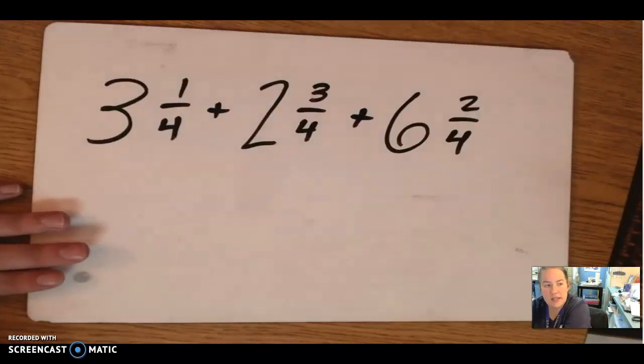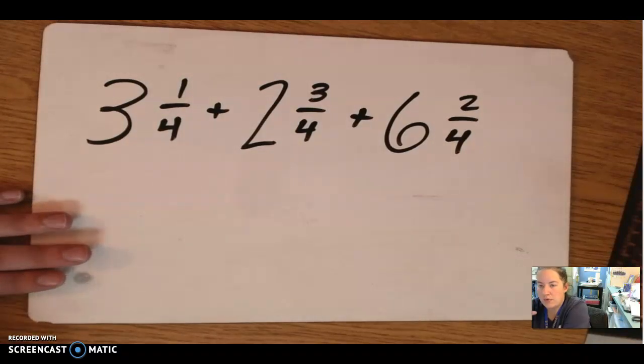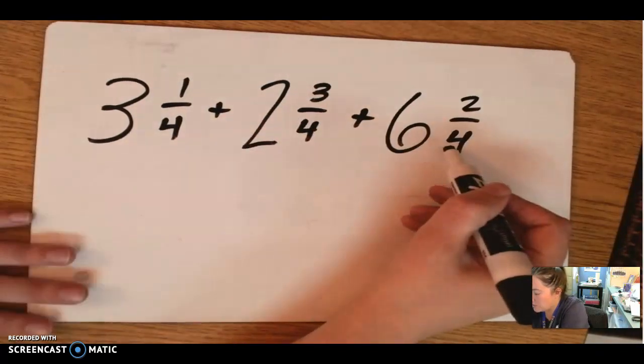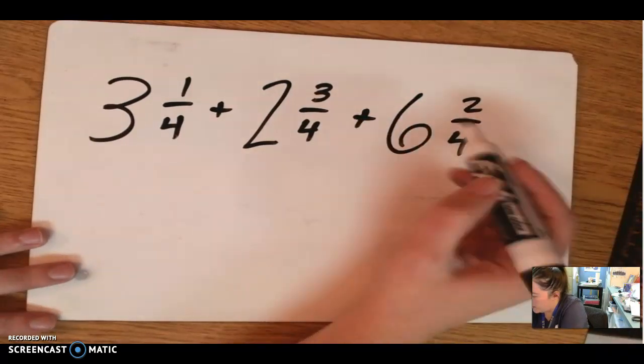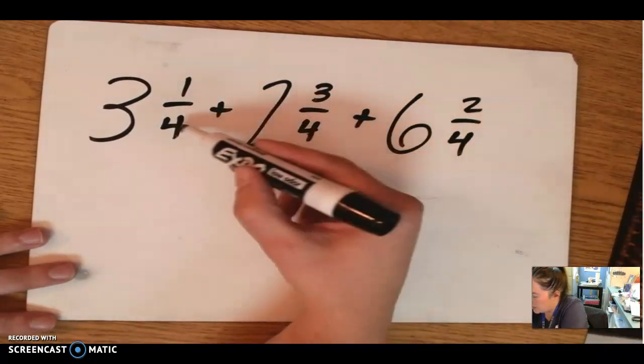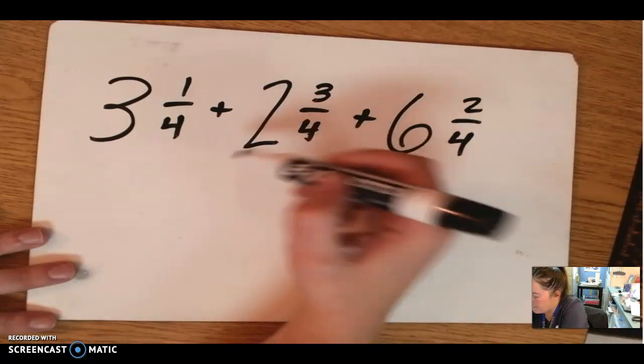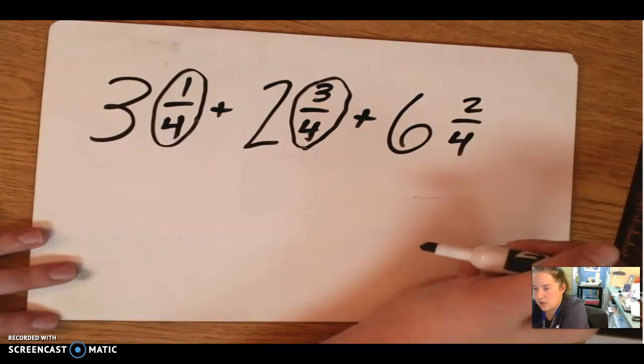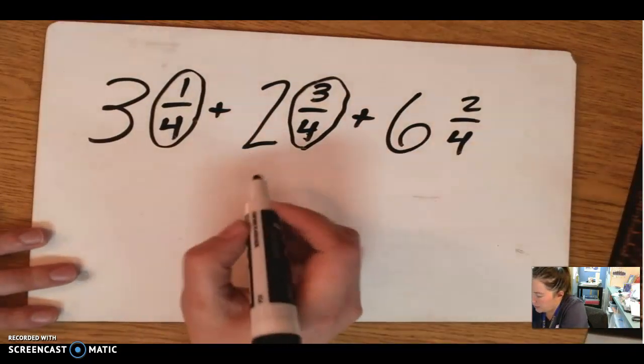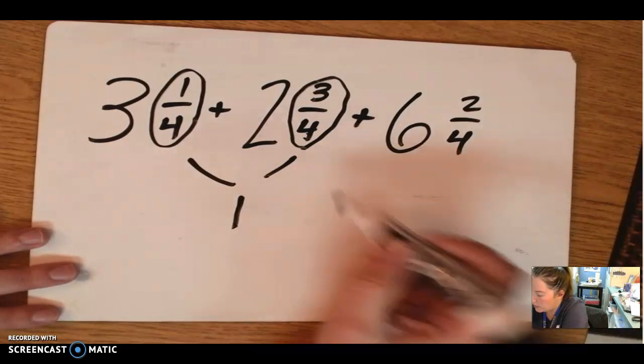Okay, write this one down. This is our last one, and then you guys are going to try it on your own. So we have 3 wholes and 1 fourth plus 2 wholes and 3 fourths plus 6 wholes and 2 fourths. Now, I'm looking just at the fraction pieces. I'm trying to make whole numbers. So for this case, what would give me whole numbers? 4 fourths, right? So look, if I take this 1 fourth and add it just to this 3 fourths, these together would be 1 whole, right?